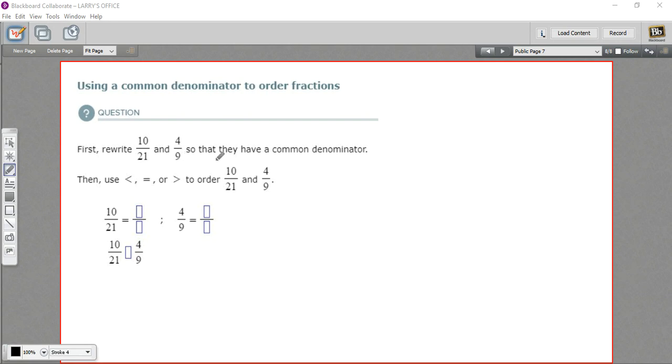The method we're going to use here is to give these fractions a common denominator. Once they have the same denominator, we can just look at the top of the fraction, and whichever one is bigger, that's the bigger fraction.